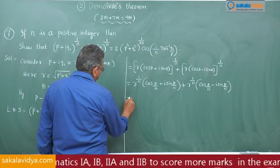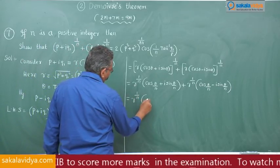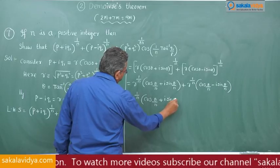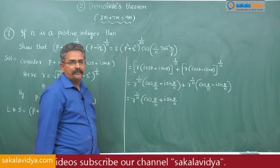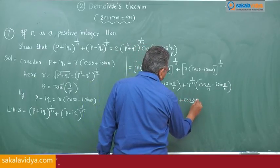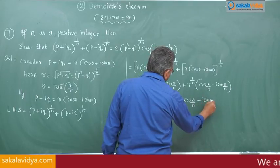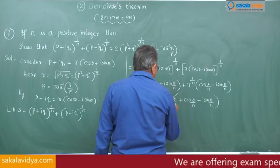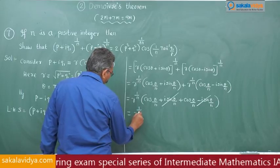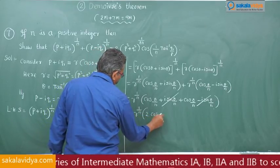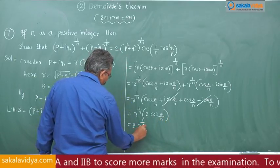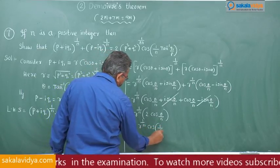Taking r^(1/n) as the common factor, we have r^(1/n) · [(cos(θ/n) + i sin(θ/n)) + (cos(θ/n) - i sin(θ/n))]. The i sin(θ/n) terms cancel, giving r^(1/n) · 2cos(θ/n), which can be written as 2 · r^(1/n) · cos(θ/n).